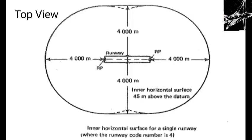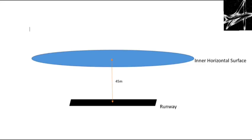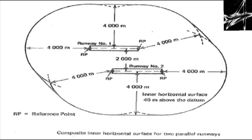What was just explained can be seen in the figure on screen. The next image shows the front view of the inner horizontal surface. For a more complicated system of two parallel runways, we have four reference points and draw circles of radius 4000 meters from each, joining them tangentially. The imaginary surface so formed is raised to a height of 45 meters above the elevation datum established for the purpose.